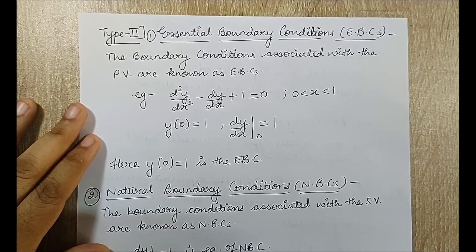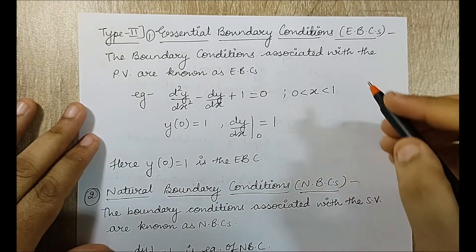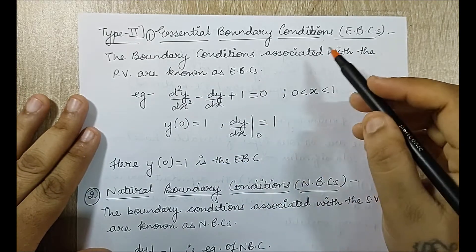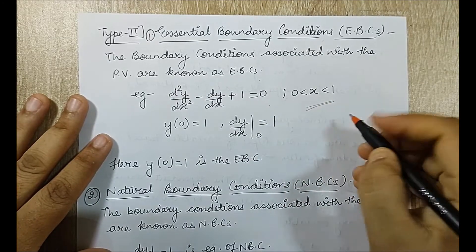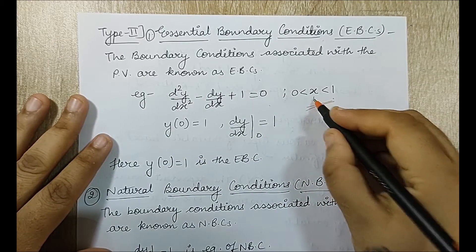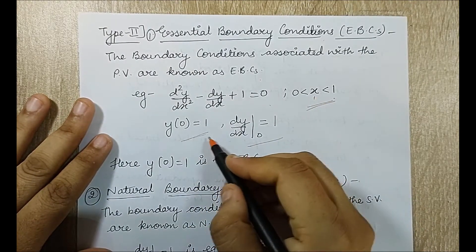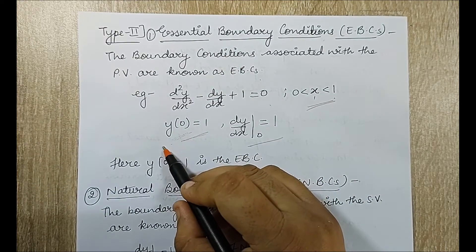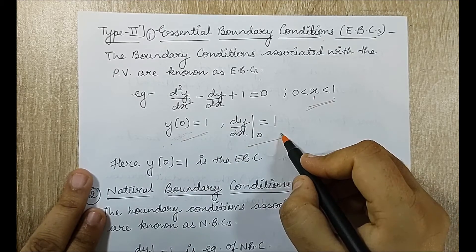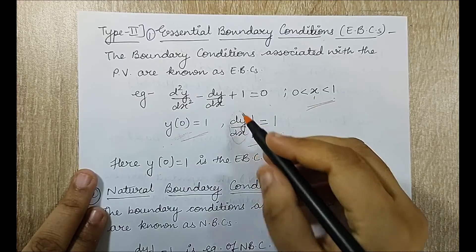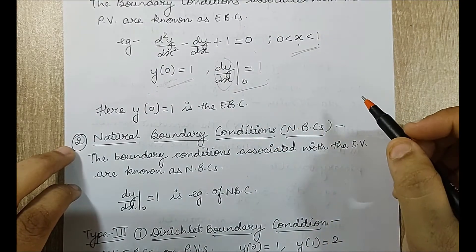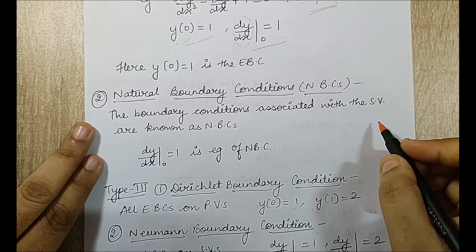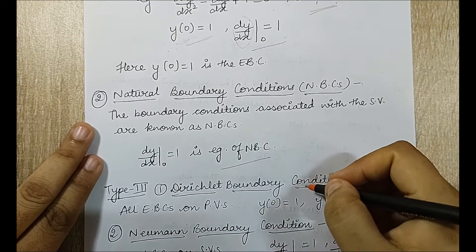Next we have essential boundary conditions (EBC). The boundary conditions associated with the primary variable are known as EBCs. For example, in a differential equation with domain from 0 to 1, the first boundary condition is an EBC because it is associated with the primary variable. The second boundary condition, which is related to a derivative of the primary variable, is called a natural boundary condition (NBC). The boundary conditions associated with the secondary variable are known as natural boundary conditions.